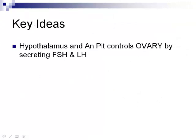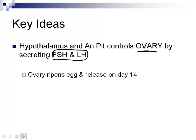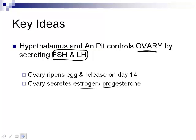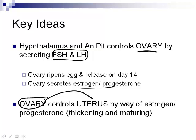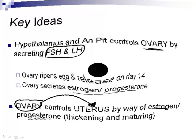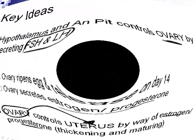Key ideas: the hypothalamus and anterior pituitary control the ovary by secreting GnRH, LH, and FSH. These cause the ovary to ripen and release the egg on day 14. The ovary then secretes estrogen and progesterone throughout the cycle. The ovary also controls the uterus via estrogen and progesterone to create a thick and mature endometrium. We need to know what each hormone does before tackling their influence on the cycles — we'll continue that tomorrow.